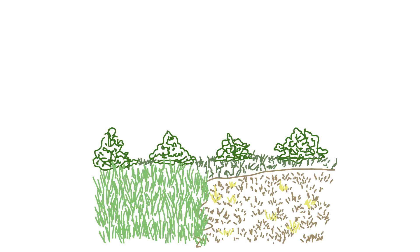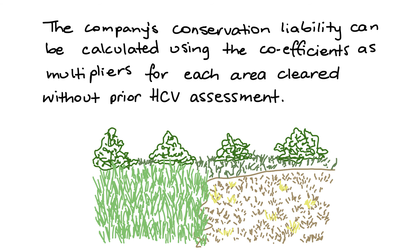After categorising the areas based on vegetation cover, the company's conservation liability can be calculated using the coefficients as multipliers for each area cleared without prior HCV assessment. The calculation of liability will be shown in another video.